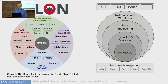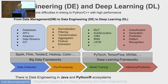Cylon uses Arrow for every arithmetic operation. All my students who worked on this project now work for a company called Voltron Data, which is devoted to making Arrow more commercially useful. There are six of my staff and students scattered around the world working on that.